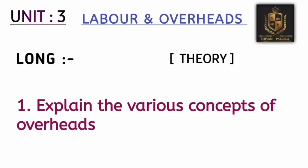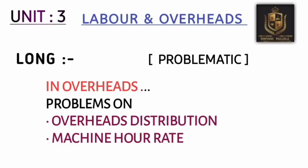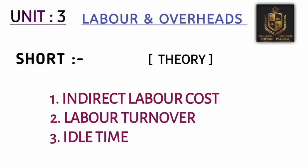In unit three, Labor and Overheads are covered. We can't expect much theory from this unit, but one important concept is 'concepts of overheads.' In the labor chapter, the problematic questions are based on Time Rate Method, Halsey Method, and Rowan Plan Method. In overheads, there are two methods: overhead distribution and machine hour rate. In part B, unit three has two questions — you need to attempt only one, either labor or overheads. Overhead costing is considered easier compared to labor.